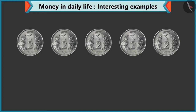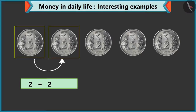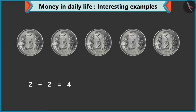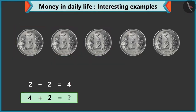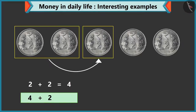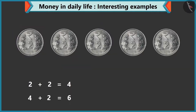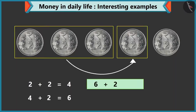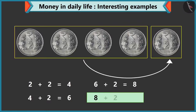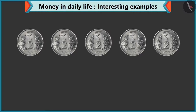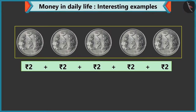Look, Chichi, adding 2 to 2 makes 4. How much will you get by adding 2 to 4? If we add 2 to 4, we will get 6. Well done, Chichi. 8 by adding 2 to 6. 10 by adding 2 to 8. Yes, 5 coins of 2 rupees equals 10 rupees.